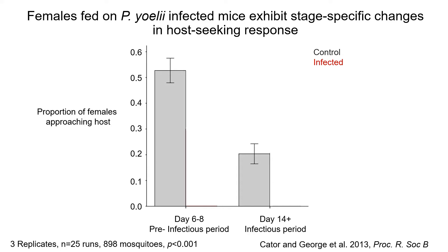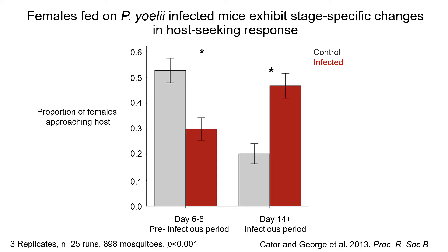If we look at uninfected mosquitoes of the same age, we see a pattern where they're fairly responsive in this assay early on, and then become less responsive over time — this is likely due to senescence. If we compare that to infected mosquitoes that have received a blood meal containing a Plasmodium yoelii parasite, which is a rodent model malaria, we see a decreased response in their feeding behavior relative to controls in that first time period, and an increased response during the infectious period — both compared to controls and to how this group was responding earlier on in the assay.